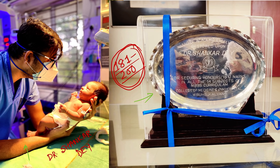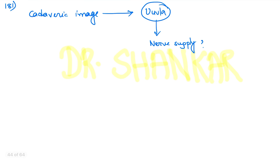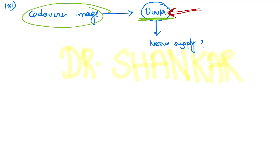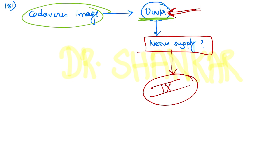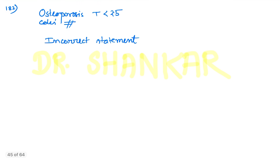Coming to question number 181: a cadaveric image was given and the question asks about the nerve supply of the structure. The arrow mark was on the uvula. The sensory nerve supply is definitely the glossopharyngeal nerve. If the question was about sensory nerve supply, the answer will definitely be the glossopharyngeal nerve.